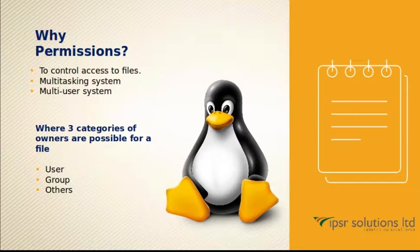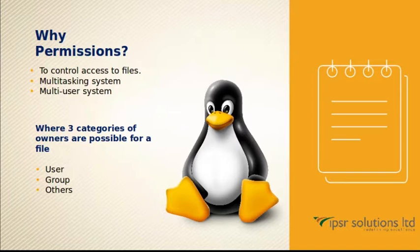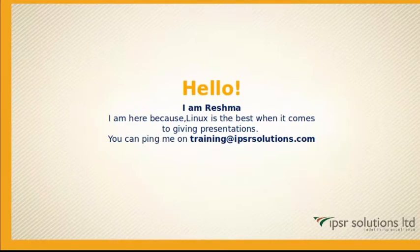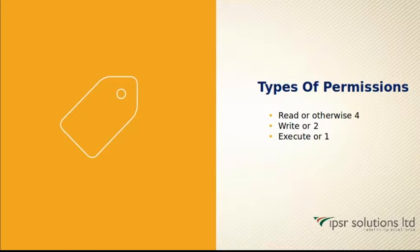Linux is a multitasking, multi-user system because multiple users can be on the system at the same time. The three categories of owners possible for a file are: the user owner, the group owner, and the outside world, or 'others'. I'm Reshma, and you can reach me at training@ipsrsolutions.com.